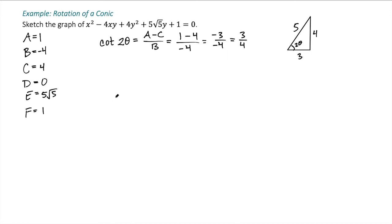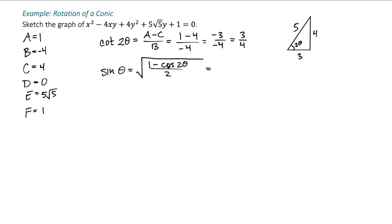I have a triangle representing 2θ, so to find sine of θ I'll use the half-angle identity: sine θ equals the square root of (1 minus cosine 2θ) over 2. Cosine of 2θ is adjacent over hypotenuse, which is 3 fifths. So this becomes the square root of (1 minus 3 fifths) over 2, which is 2 fifths over 2, or 1 fifth — giving me the square root of 1 fifth.